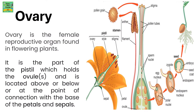The female part is known as the pistil. Just as the stamen is the male part, the pistil is the female. The pistil contains three parts: the ovary, the style, and the stigma.